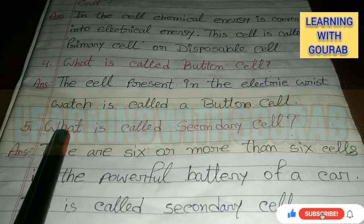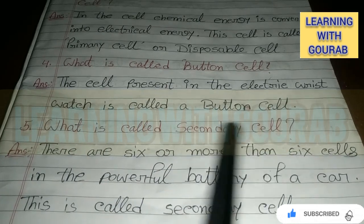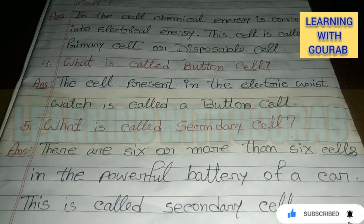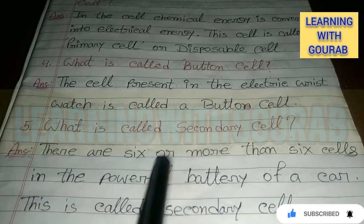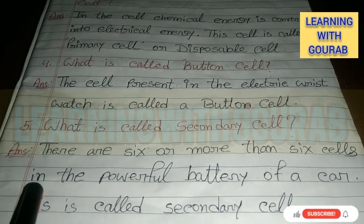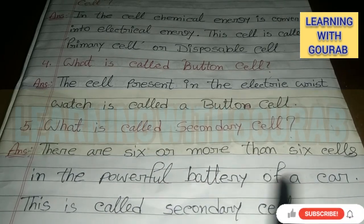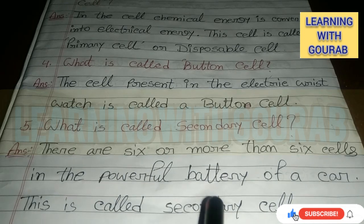What is called a secondary cell? Answer: The six or more than six cells in the powerful battery of a car — this is called a secondary cell.